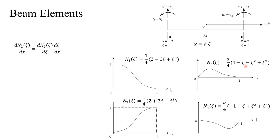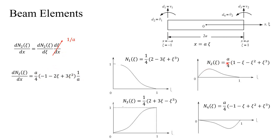N3 is 1 at node 2, and the slope of N4 equals 1 at node 2. To verify: taking the derivative of N2 with respect to x using the chain rule, dξ/dx = 1/a, and differentiating the second shape function with respect to ξ, we get (1/a)(-1 - 2ξ + 3ξ²) times the coefficient a/4. Evaluating at ξ = -1 (node 1) gives a value of 1, confirming that the shape function is correct.